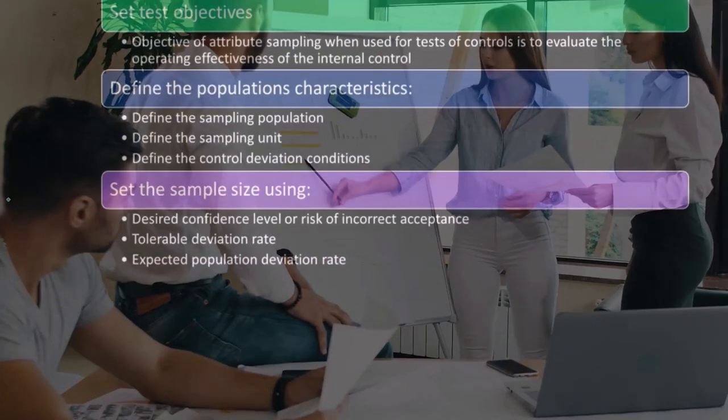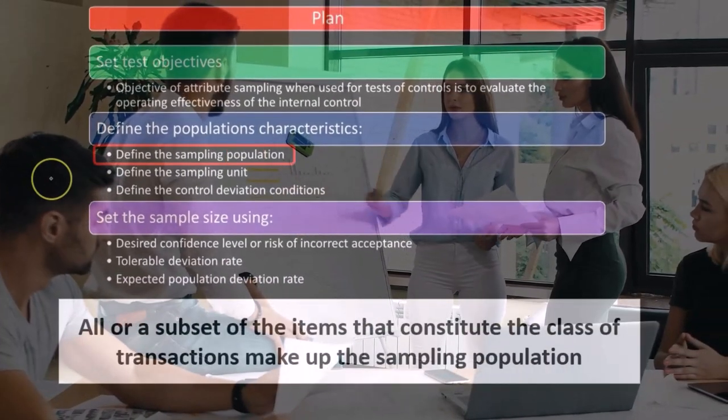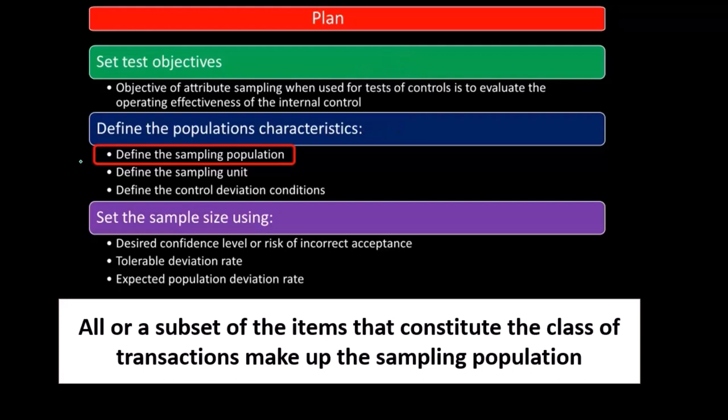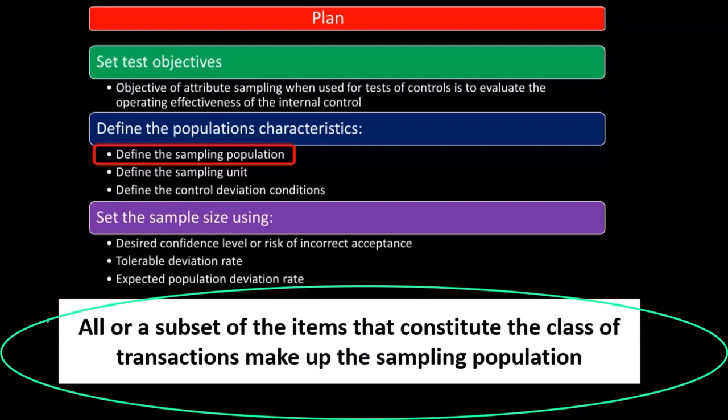Now we're going to go into the definitions in define the population characteristics, starting with defining the sampling population. So what does it mean to define the sampling population? That's going to be all or a subset of the items that constitute the class of transactions that make up the sampling population.